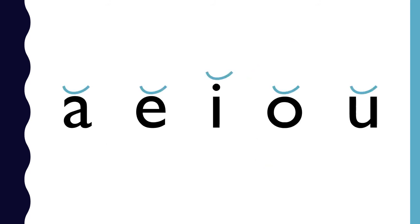Short vowels are shown by a small curved symbol on top. Let's review the vowel sounds again with the short vowel symbol this time.